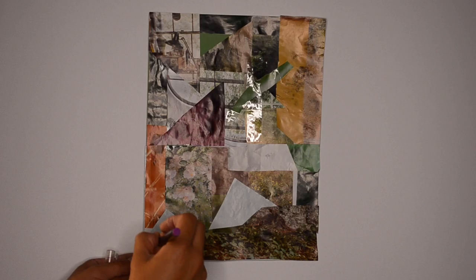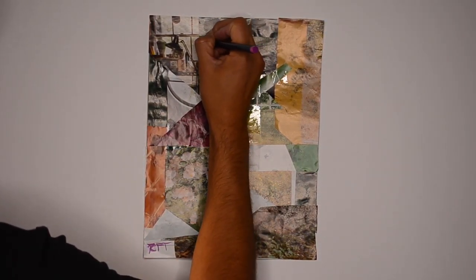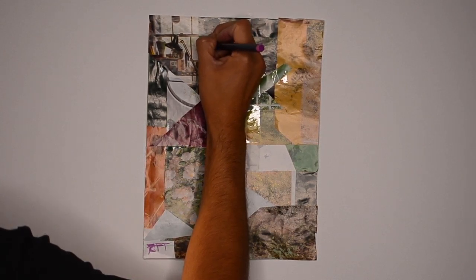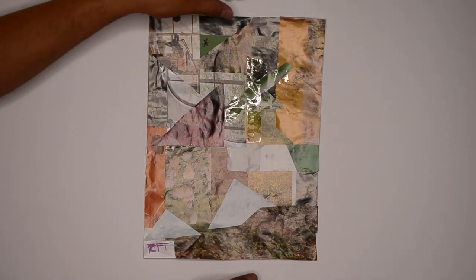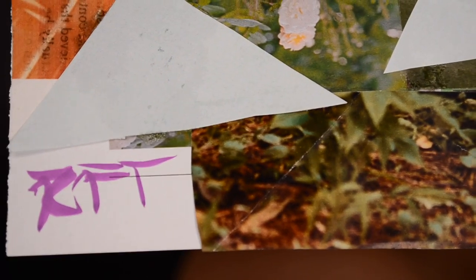As always, I do my RFT signature and the star within the triangle. How the star came to be was I did my first one and there was a triangle left, like a space left. So I wanted to just have that symbol throughout these art pieces.